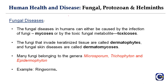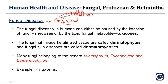Now let's discuss fungal diseases one by one. Fungi have advantages — we consume mushrooms as a rich source of protein and we have antibiotics like penicillin extracted from fungi. For disadvantages, fungi are said to cause a lot of infections. The other name for fungal diseases is opportunistic infections.